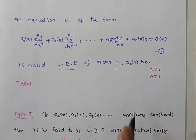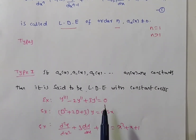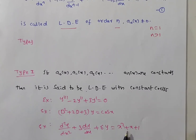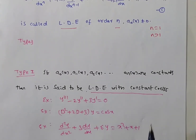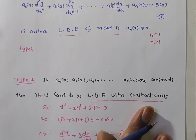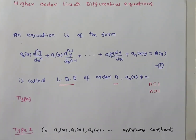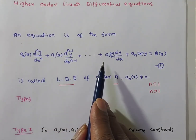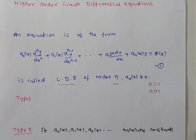In this case, q(x) can be either a constant or a variable — the equation is still a linear differential equation with constant coefficients. The next type: if any one of a₀(x), a₁(x), …, aₙ(x) is a variable, then it is called a linear differential equation with variable coefficients.